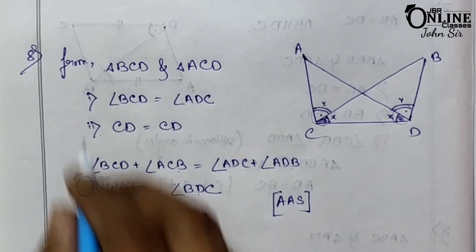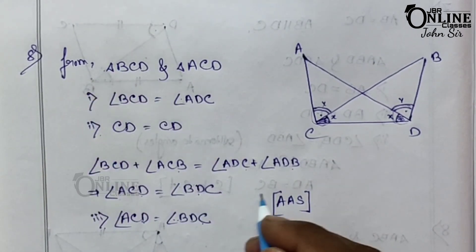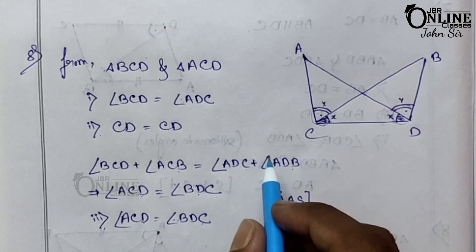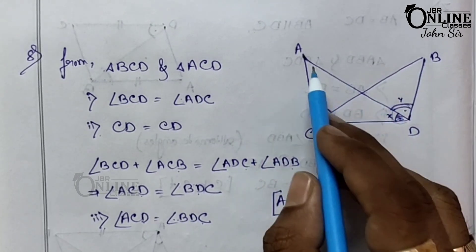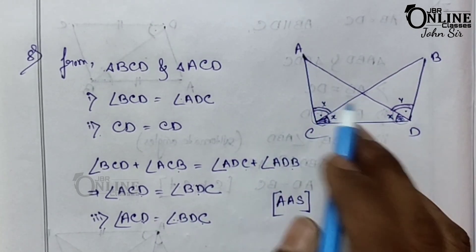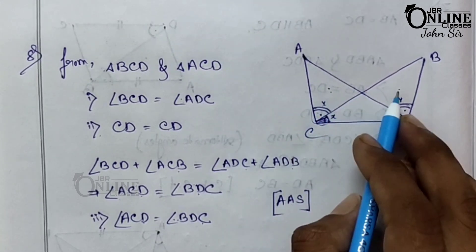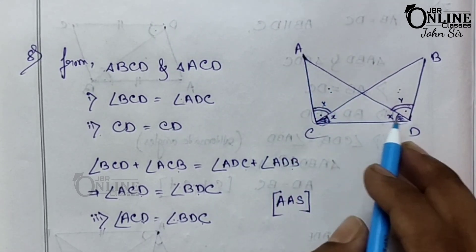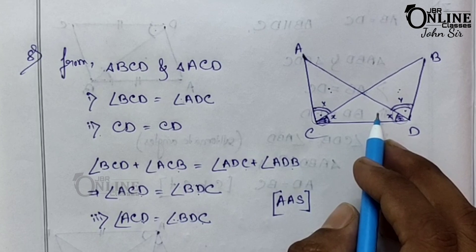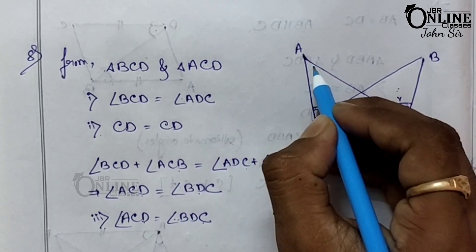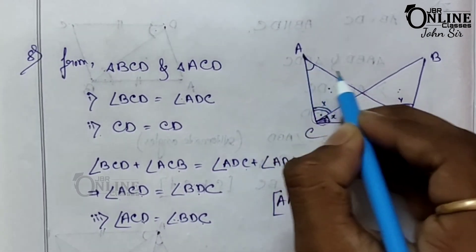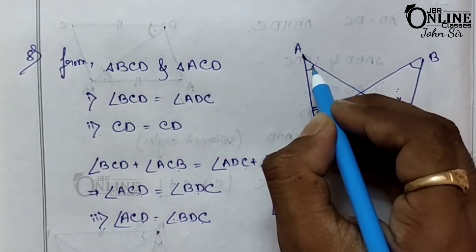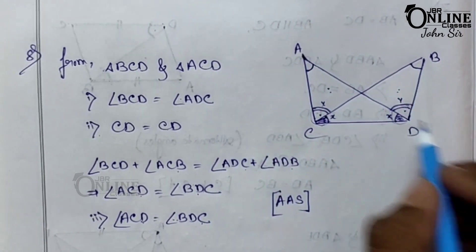The first part is proved. For the second proof, we have to show BC equal to AD — if these two triangles are congruent, then this side equals the other by CPCT. Similarly for the third part, angle A equal to angle B — also by CPCT.